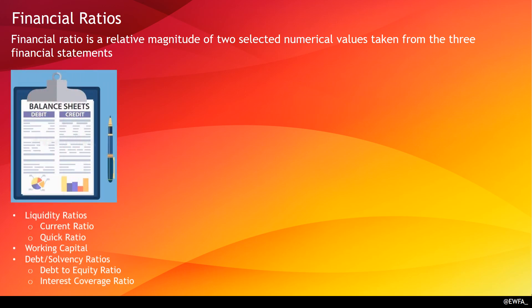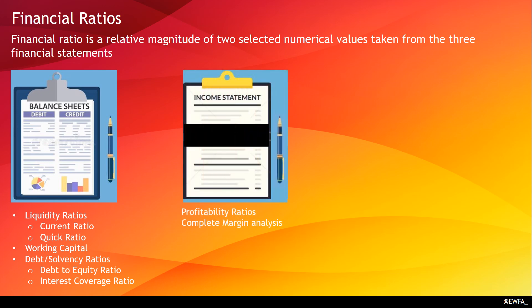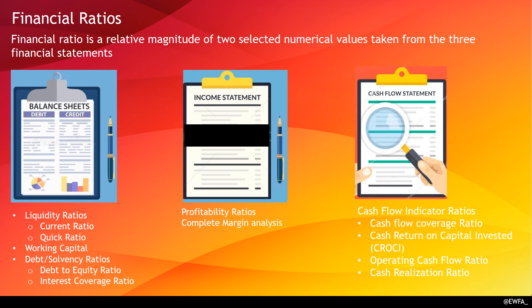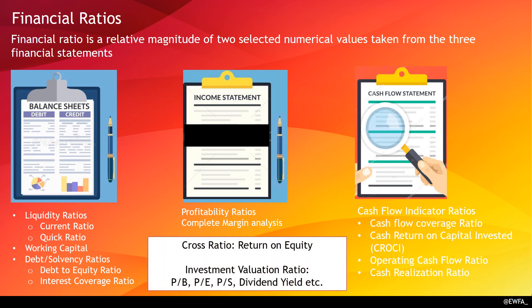From the balance sheet we can calculate liquidity ratios, working capital ratios, and debt solvency ratios. From the income statement we can calculate profitability ratios and do a complete margin analysis. From the cash flow statement we can calculate cash flow coverage ratio, cash return on capital invested, operating cash flow ratio, and cash realization ratio. There are also cross ratios — picking one component from one statement and another from a different statement — for example, return on equity uses net profit from the income statement and equity from the balance sheet. Investment valuation ratios like price-to-book, price-to-earnings, dividend yield, and price-to-sales primarily use the current market price in the numerator or denominator.